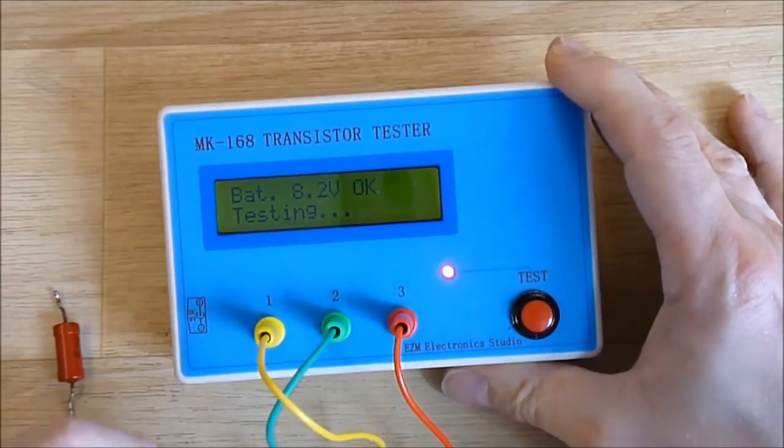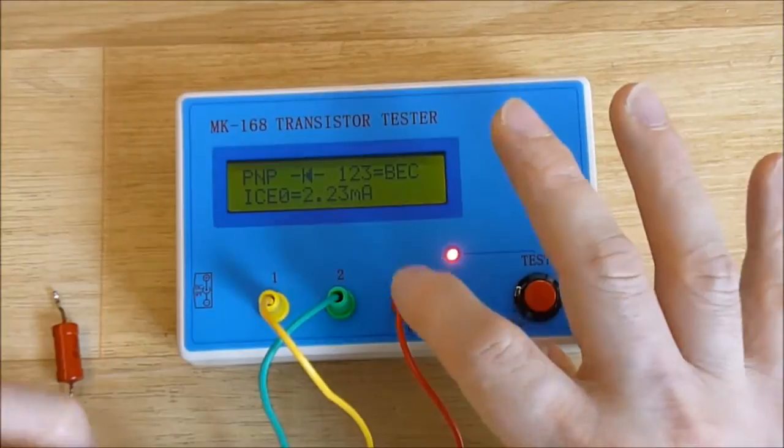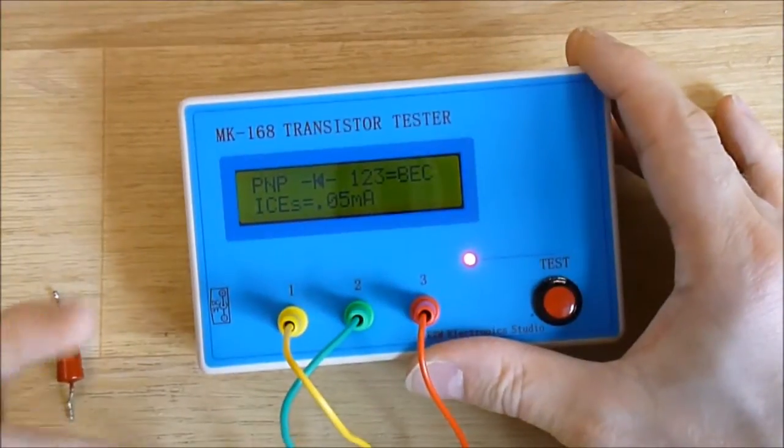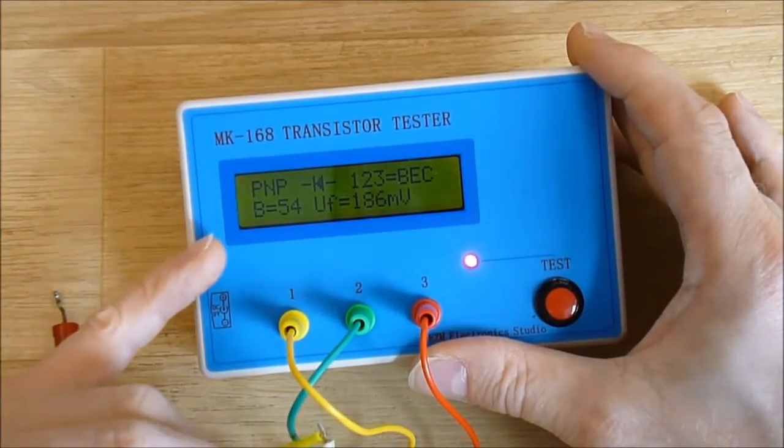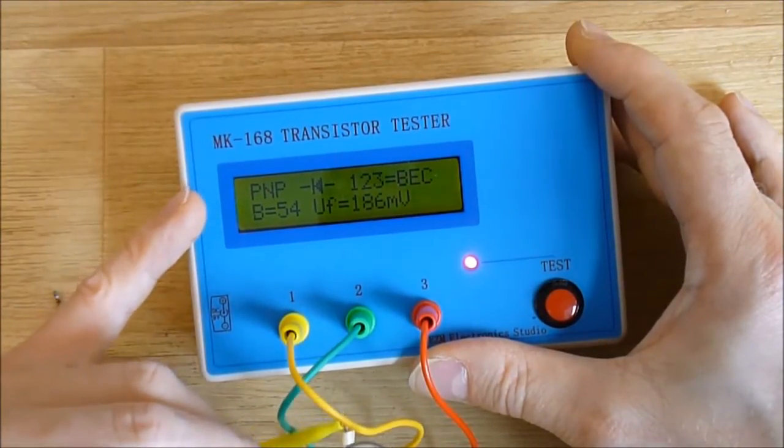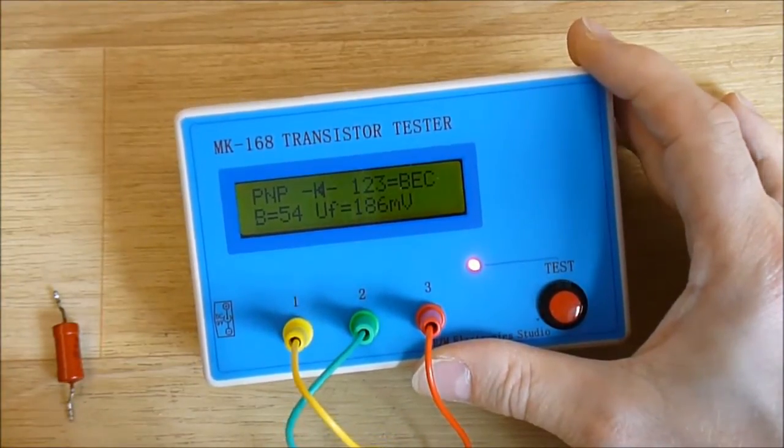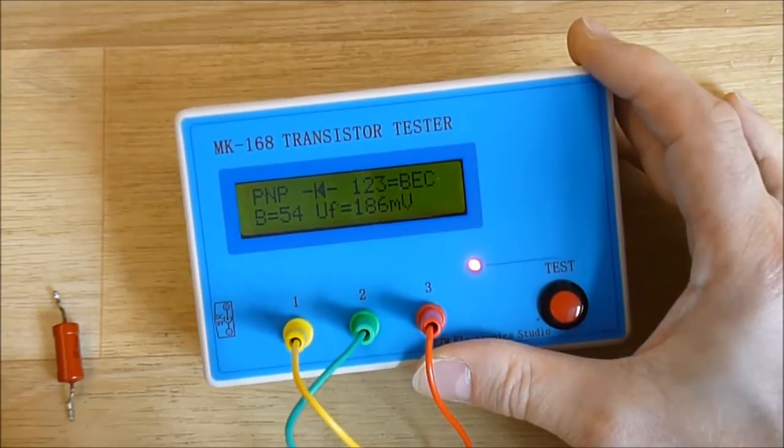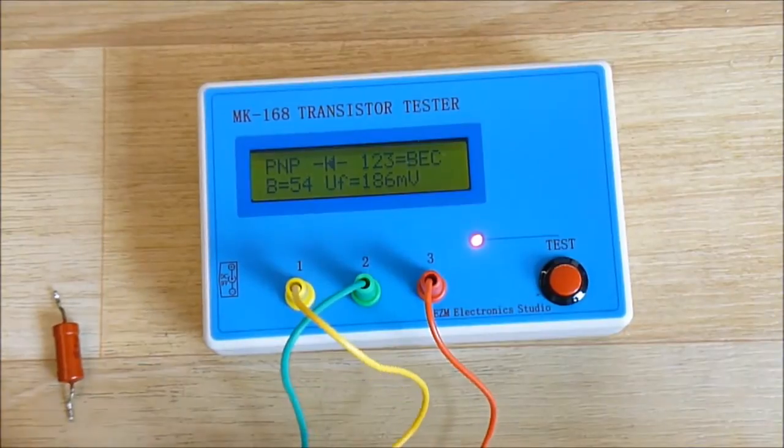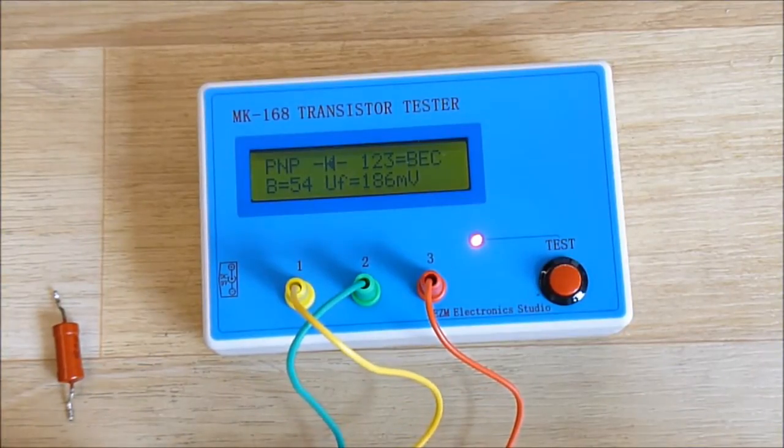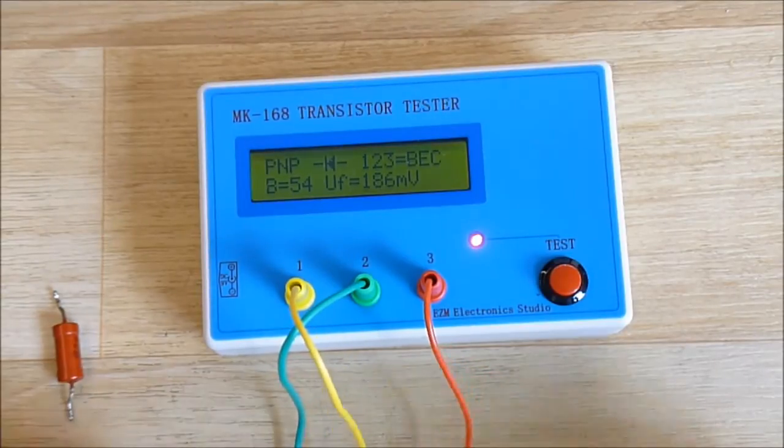When you power it on, it gives you the pin assembly. You can plug it whatever way you want. It gives you several kinds of information. For transistor you have beta, you have the kind of transistor, and you have characteristics. It will power off after a few seconds.